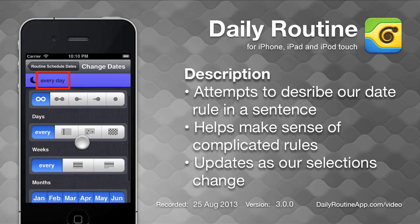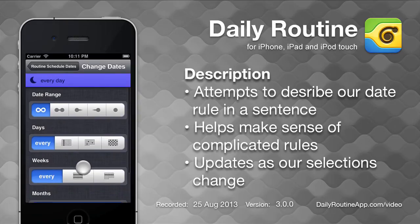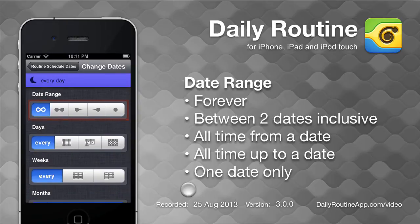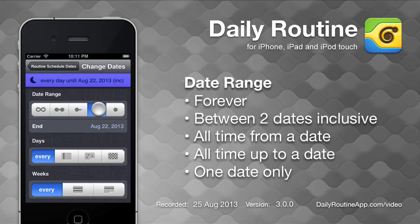At the top, we see a description of our date rule. The date range option lets us specify the date range that our rule applies to. We can select a single date, all dates up to a specific date, all dates from a specific date, or dates between two dates.